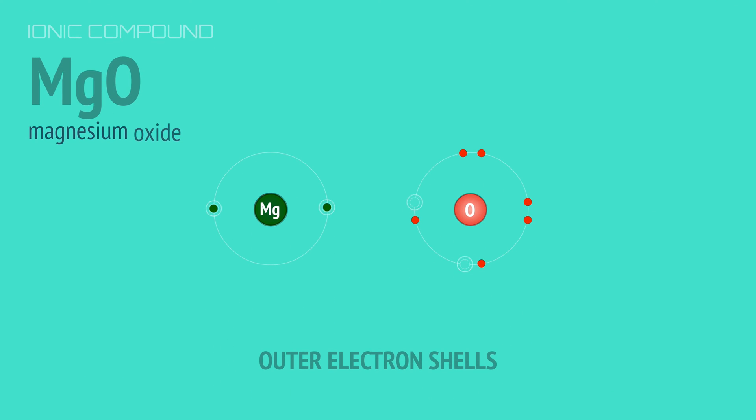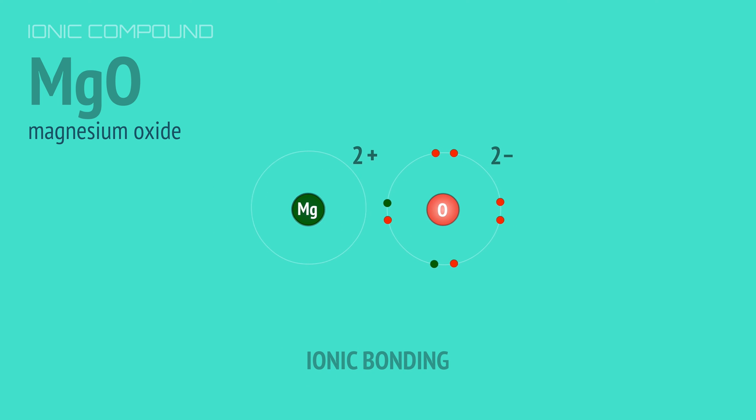Magnesium readily gives up its two outer electrons, and oxygen takes them to complete its outer shell, resulting in a magnesium ion with a 2 plus charge and an oxide ion with a 2 minus charge.